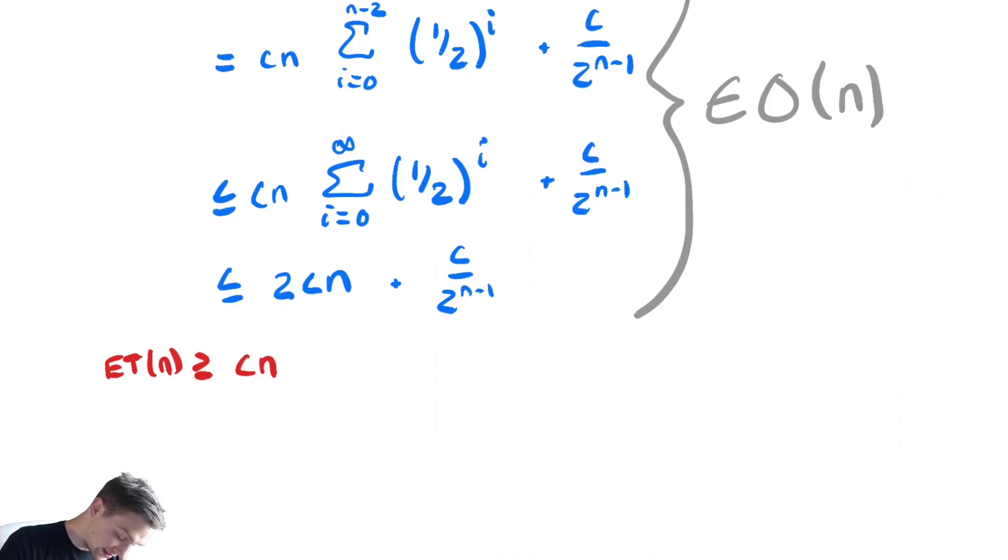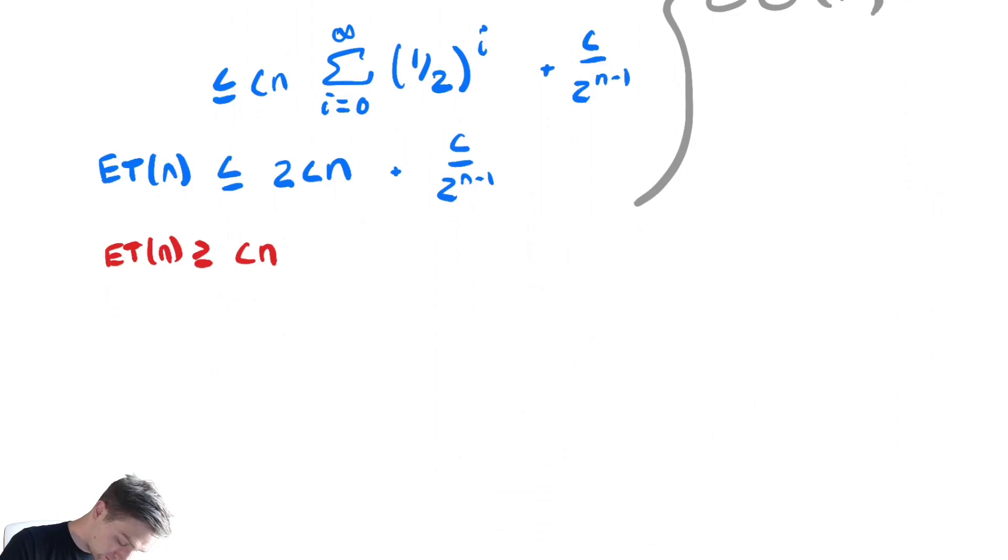And above, just to specify, we had ET(n) less than or equal to that. And, with those two things, that means ET(n). So, ET(n) must be in theta of n.